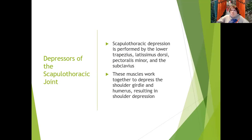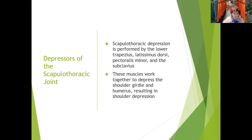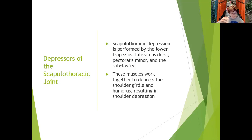They work together to depress the shoulder girdle and the humerus, resulting in shoulder depression. Shoulder depression is important because you don't want to wear your shoulders as earrings — we're always nagging people in the clinic to take their shoulders down. There's a note in the book about how tightness of the levator scapula is often attributed to mental stress, but it's often a result of poor posture, rounded shoulders, and forward shoulder position. Over time, this can inflame the levator scapula, causing spasms, cervicogenic headaches, and shoulder alignment issues.